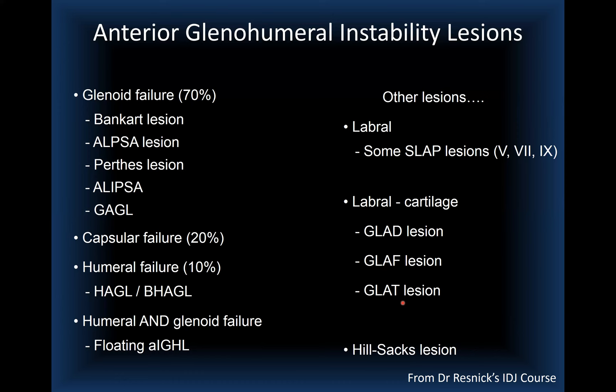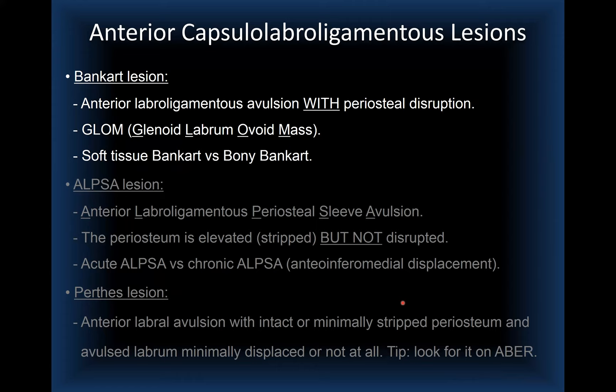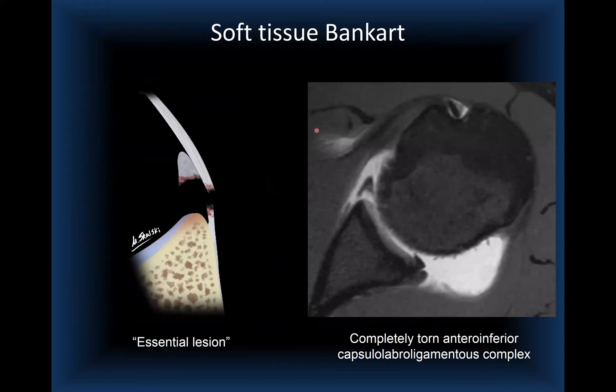The Bankart lesion is a complete avulsion of the anteroinferior capsulolabral ligamentous complex with periosteal disruption — completely separated. It comes in two forms: soft tissue and bony Bankart, and sometimes can appear mass-like.